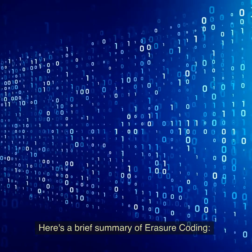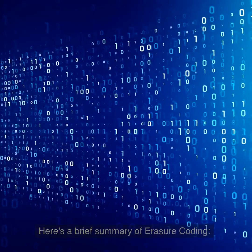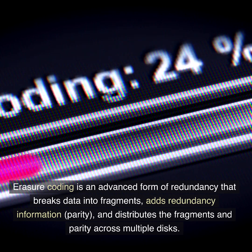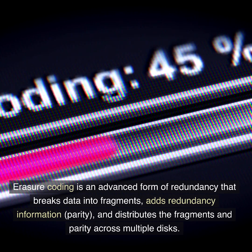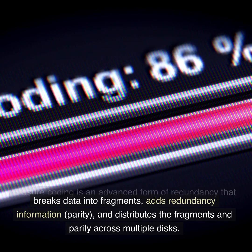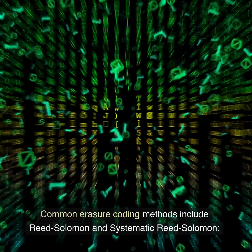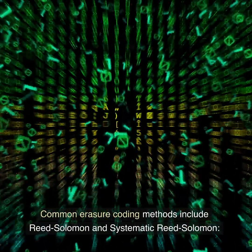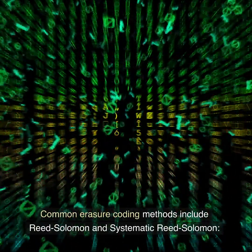Here's a brief summary of Erasure Coding. Erasure Coding is an advanced form of redundancy that breaks data into fragments, adds redundancy information — parity — and distributes the fragments and parity across multiple disks. Common Erasure Coding methods include Reed-Solomon and Systematic Reed-Solomon.